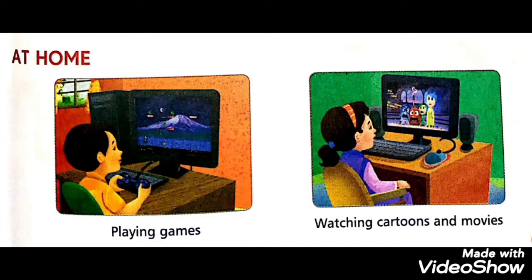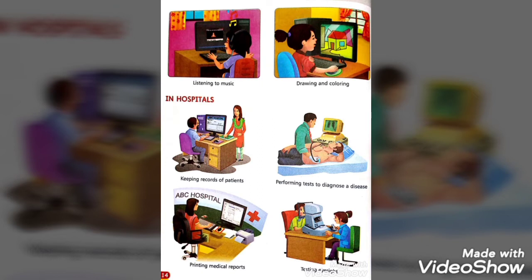The first place where we use computers is in our home. At home, the uses include: playing games — computer mein hum game khel sakte hain; watching cartoons and movies; listening to music — gaane bhi computer ke dwara sune ja sakte hain; and drawing and coloring. These are all things we can do at home using a computer.